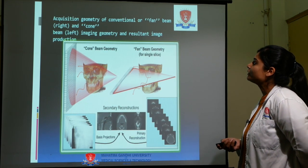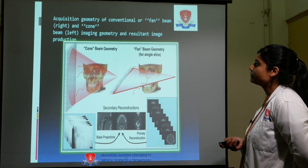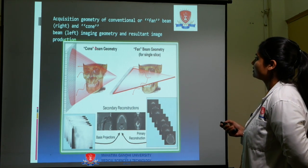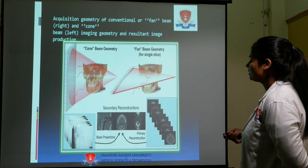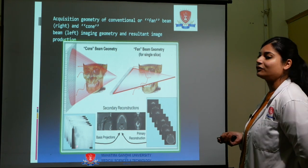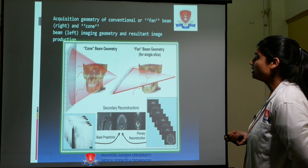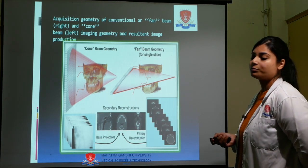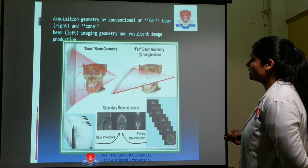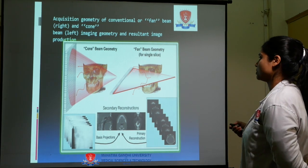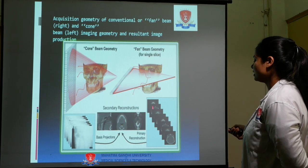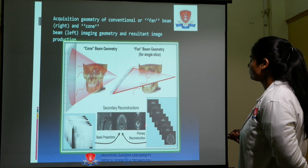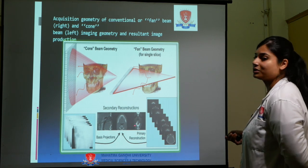This shows the acquisition geometry of a conventional fan-shaped beam on the right side and a cone-shaped beam on the left side. The cone beam geometry captures multiple slices, cumulatively known as basis projections. Secondary reconstruction is done by the computer, giving the 3D image in all three directions. The fan-shaped beam captures images only in axial sections, and primary reconstruction gives the 3D image.